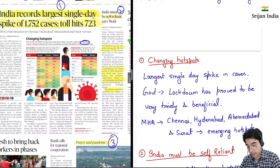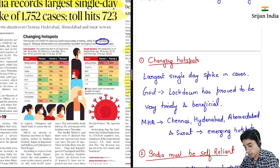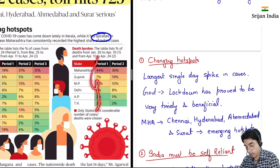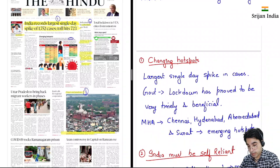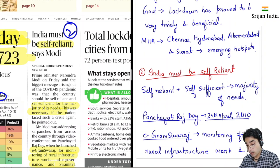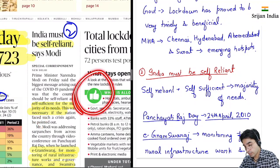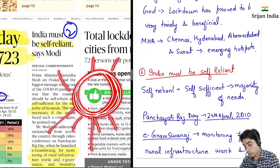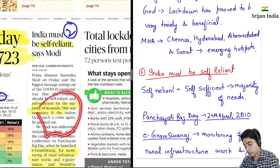Ministry of Home Affairs ne kaha, Chennai, Hyderabad, Ahmedabad aur Surat — yeh emerging hotspots hai. Yahan pe number of cases kaafi increase ho raha hai. Then the second one is India must be self-reliant, says Prime Minister. Self-reliant ka matlab hota hai self-sufficient hona. Majority of needs hum khud apni fulfill kar pa rahe hai. Jaise abhi pandemic ke cases mein dekha, kaafi saare states ne apni border lock kar di hai, exports unhone stop kar di hai. Toh in cases mein agar humari country self-reliant hai, toh humari needs hamper nahi hongi.